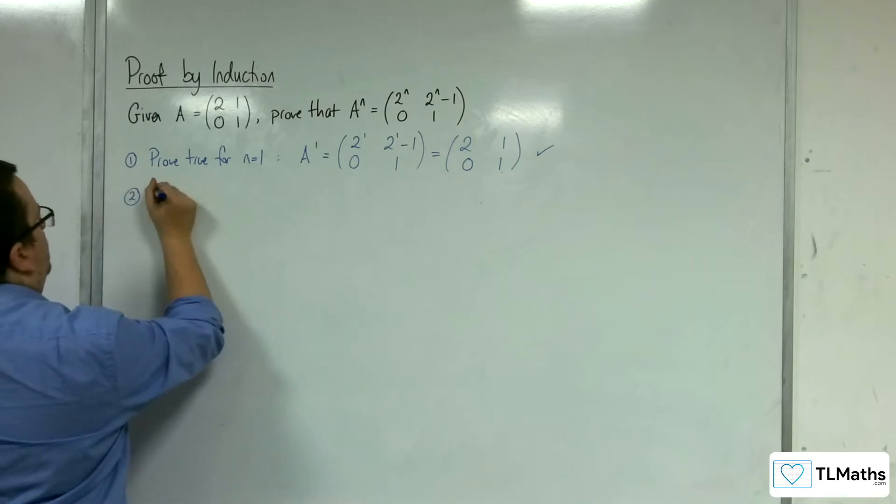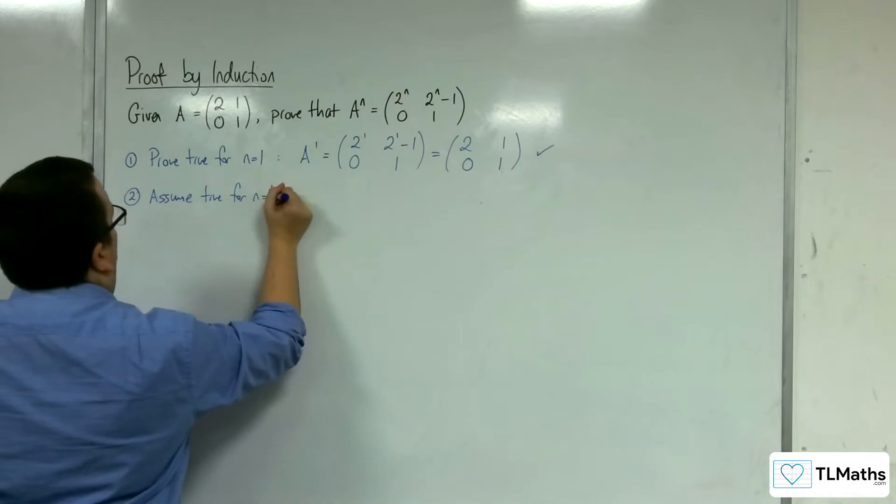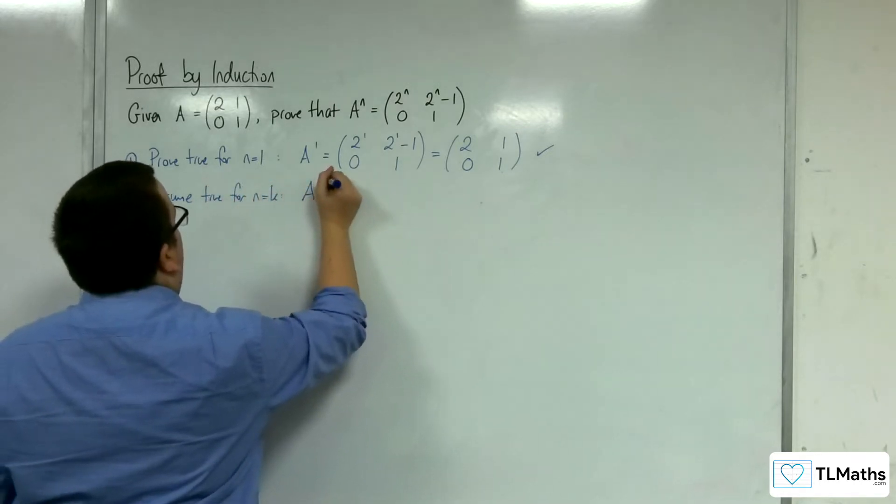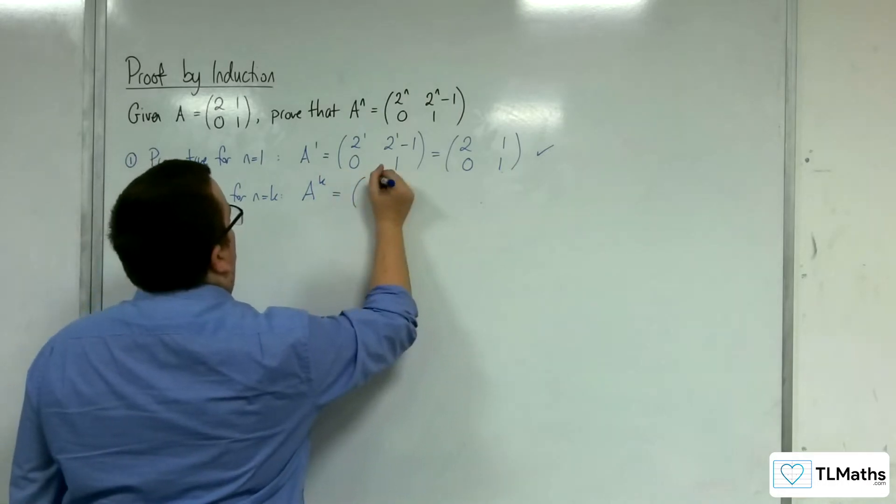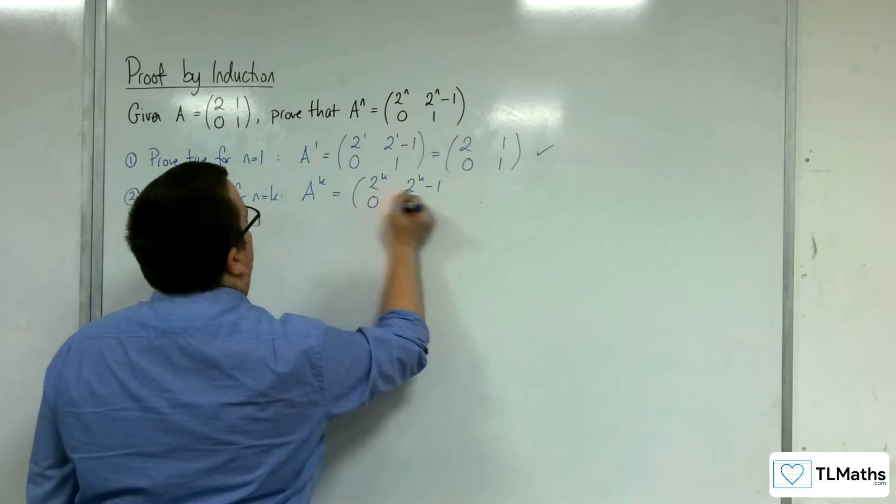Number 2: assume true for n equals k. So A^k is [2^k, 2^k - 1; 0, 1].